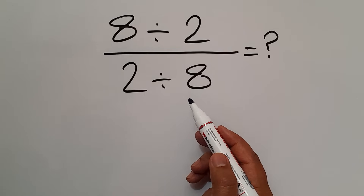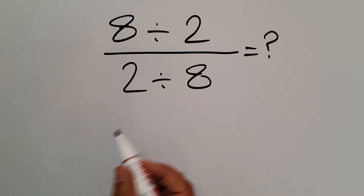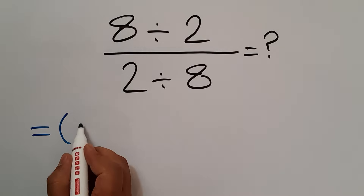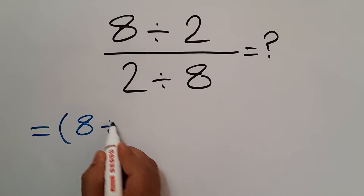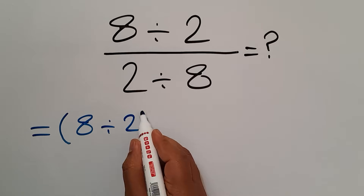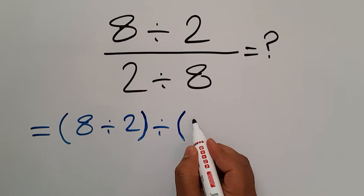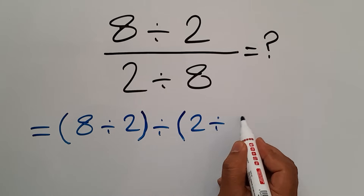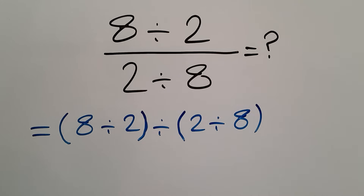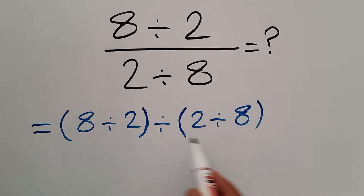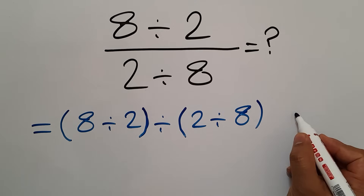Let's get started. Instead of this fraction, we can write parentheses: the numerator 8 divided by 2, divided by the denominator 2 divided by 8. Now we have two parentheses and one division. According to the order of operations, which is PEMDAS...